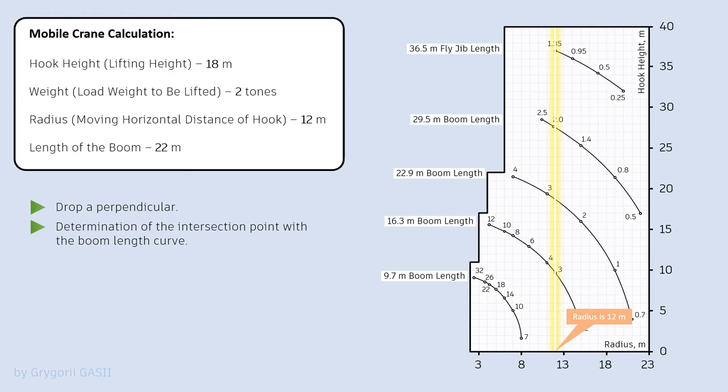The boom length of 22.9 meters is considered because 22.9 meters is greater than 22 meters. The point of intersection of the perpendicular and the curve is the maximum load capacity of the mobile crane with the boom length of 22.9 meters and moving horizontal distance of the hook of 12 meters.